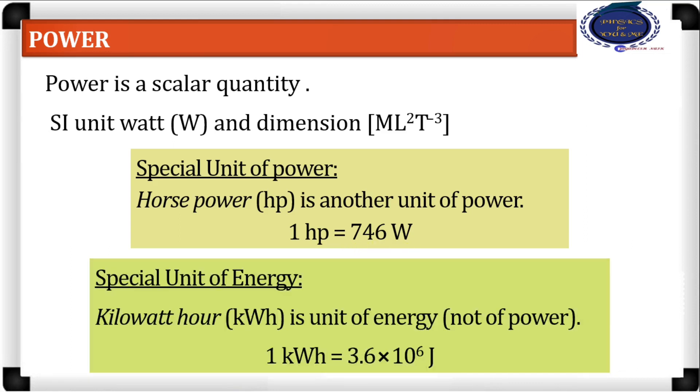Kilowatt hour, KWh, is often confused with the unit of power. No, it is not a unit of power. It is a unit of energy. The SI unit for measuring energy is joules, but kilowatt hour is another special type of unit, usually for electrical energy. It is the energy consumed by an electrical instrument of 1000 watt in one hour. Again, the conversion formula: 1 kilowatt hour is equal to 3.6 times 10 raised to 6 joules.